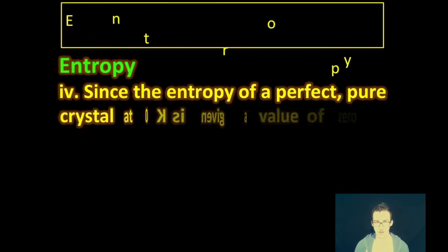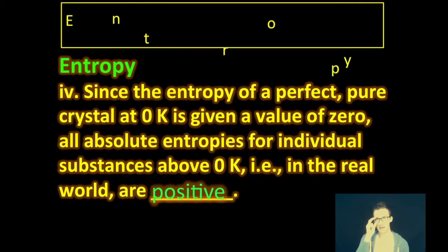Fourth thing to keep in mind as you think about entropy. Because the entropy of a perfect pure crystal at zero Kelvin is given a value of zero, all absolute entropies for individual substance above zero Kelvin, i.e. in the real world, are positive. Zero Kelvin, absolute zero, all molecular motion stops in theory. So, that would be the instance in which we have zero entropy or everything is completely ordered. In our world everything is in motion and therefore it will have some positive entropy value.